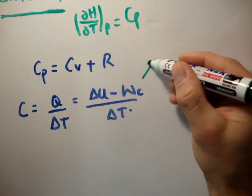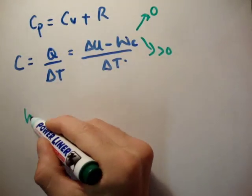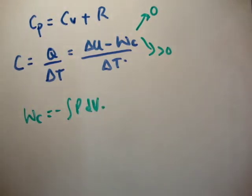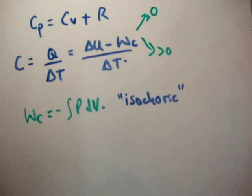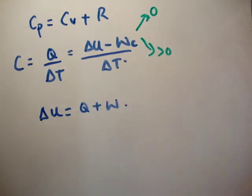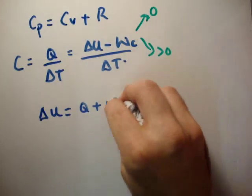The work can either be zero or it can be greater than zero. The only way compression work can be zero is if there is no change in volume — we have an isochoric process. This is important; the whole idea of an isochoric process is very important. Looking at the first law, delta U is equal to Q plus W. The only way to increase the internal energy of something — if we're only talking about compression work — is either by adding heat or by compressing the system. But I'm saying the system is at constant volume, so there is no compression work being done.